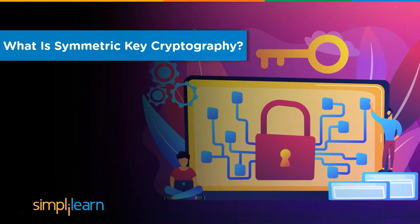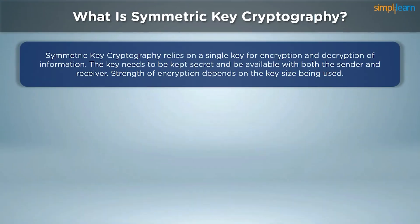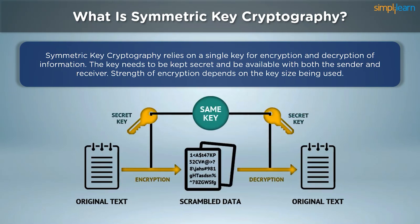Let us understand how symmetric key cryptography works before moving on to specific algorithms. Symmetric key cryptography relies on a single key for the encryption and decryption of information. Both the sender and receiver need to have a pre-shared secret key to convert plain text into ciphertext and vice versa. As you can see in the image, the key used for encryption is the same key needed for decryption. The secret key should not be sent along with the ciphertext, as that would defeat the entire purpose of cryptography. Key exchange can be done beforehand using other algorithms like the Diffie-Hellman key exchange protocol.